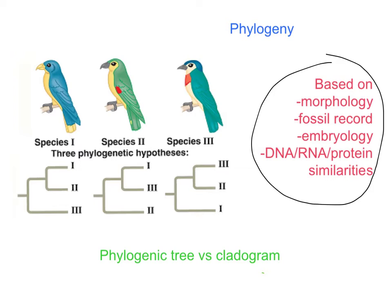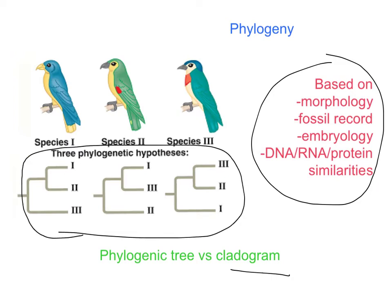Once we've determined these relationships, we can develop a phylogenetic tree or cladogram. Technically the two are different: the phylogenetic tree is our true evolutionary history, while the cladogram is a hypothesis of their relationship. But most biologists use those two words interchangeably. Here we have an example with three species of birds and three possibilities of how they are related.